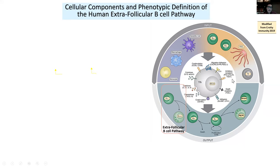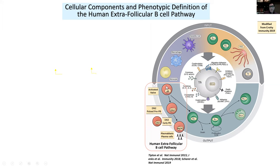We've been trying for the last few years to identify how this works in humans — who are the players and what are the rules. What we think we have identified are the components in humans, starting with an activated naive B-cell that becomes an effector B-cell. We call it the DN2, and I'll tell you what that represents and why. These cells are also called, in many other ways — atypical memory cells, exhausted memory cells, anergic cells, CD21-low cells — depending on the gating or identification strategies of different groups.